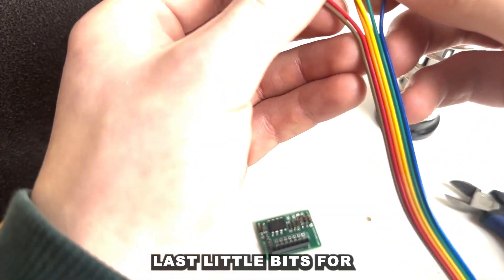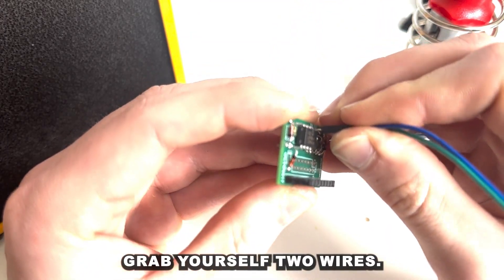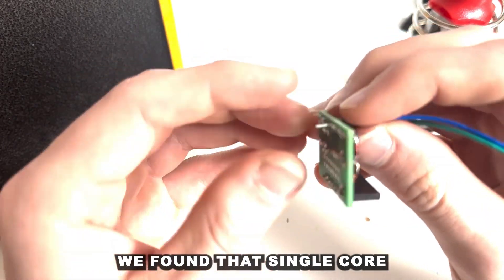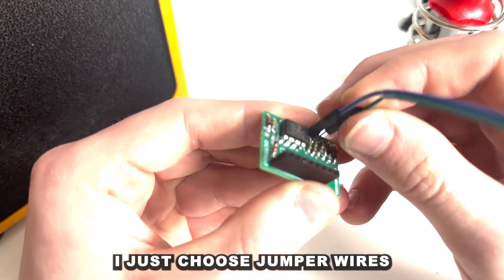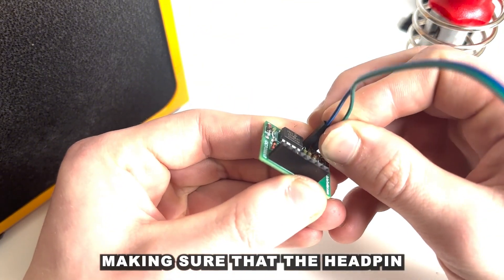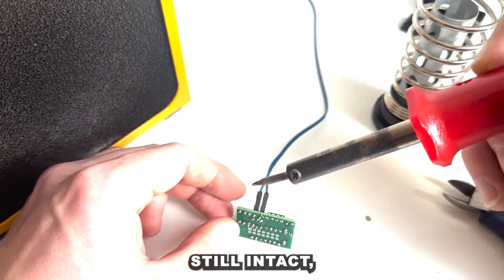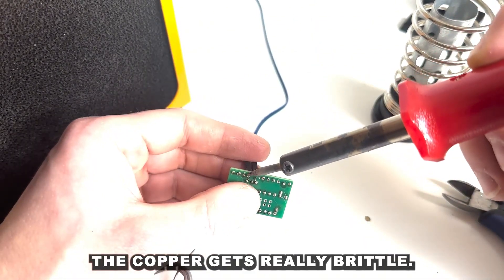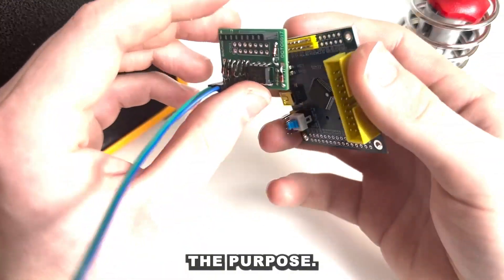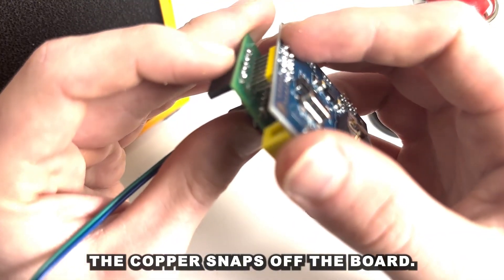Last little bits for the circuit board. Grab yourself two wires. We found that single core wire works the best but in this case I just used two jumper wires making sure that the header pin is still intact. We found that if you strip the wire on these jumpers the copper gets really brittle and it's not really suited for purpose. We found that the copper snaps off the board.